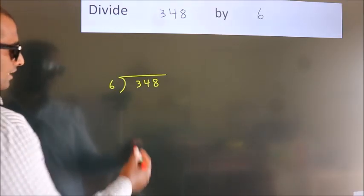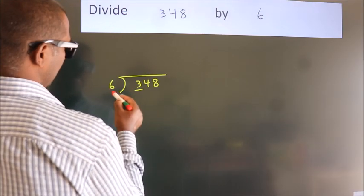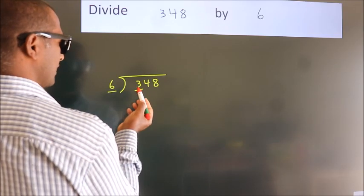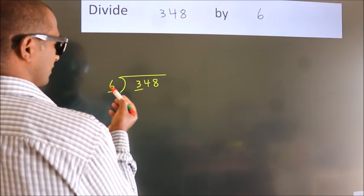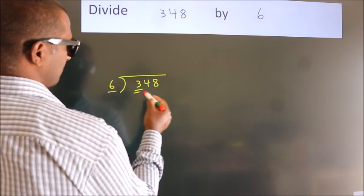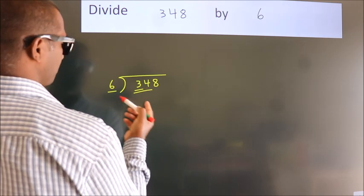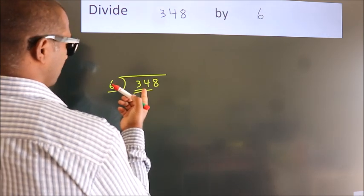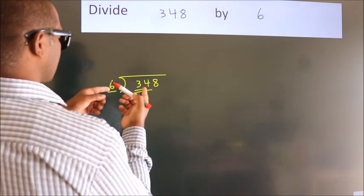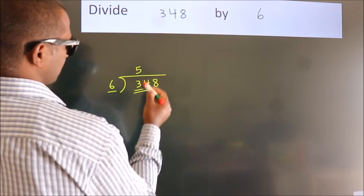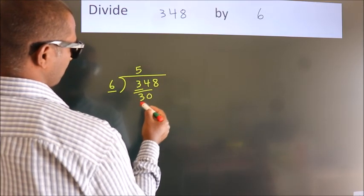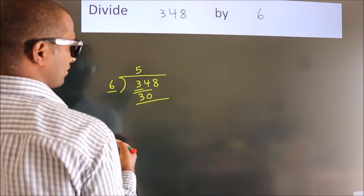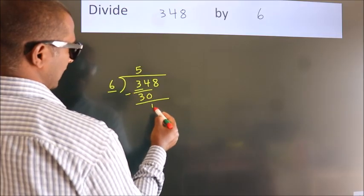Next, here we have 3, here 6. 3 is smaller than 6, so we should take 2 numbers, 34. A number close to 34 in the sixth table is 6 fives, 30. Now we should subtract. We get 4.